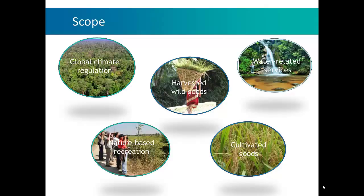The scope of the tool covers five groups of services: global climate regulation; harvested wild goods, which includes non-timber forest products and also timber; water-related services, including flood protection, water quality, and regulation of water provision; nature-based recreation; and also cultivated goods.